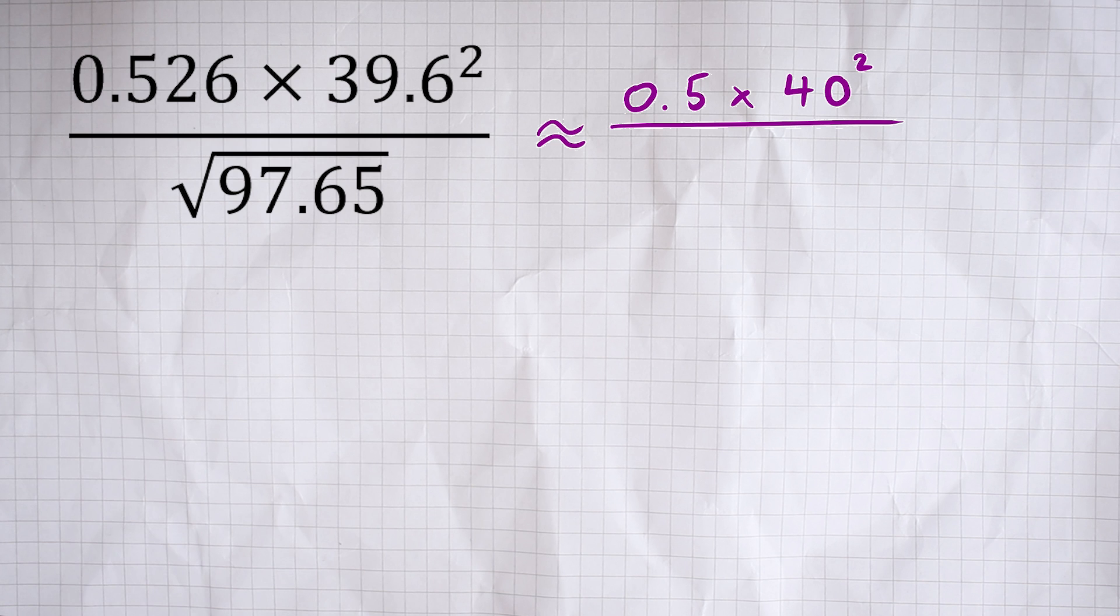The last number, 97.65, just looking at that first digit, the nine, and it's followed by seven, so I'm going to round it up. In other words, that 97.65 is approximately 100. If I round that 97 up, I round it up to 100.